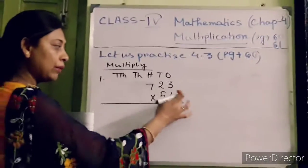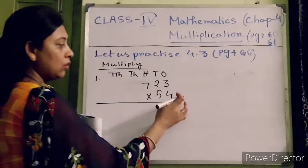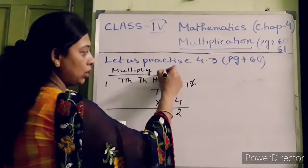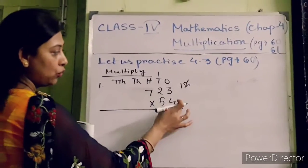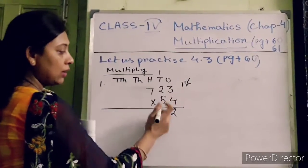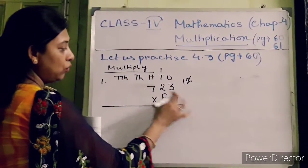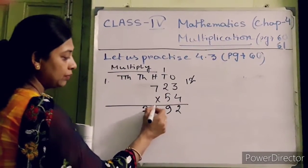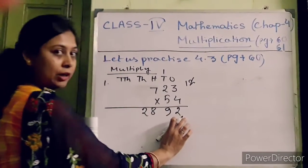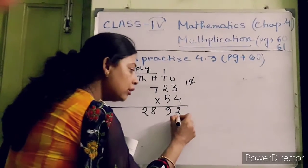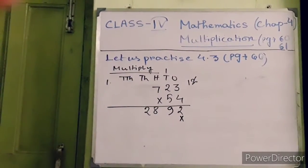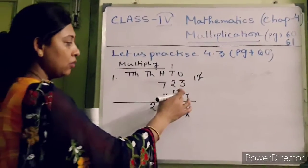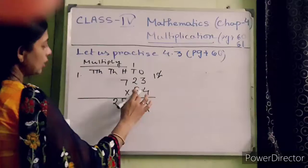You have to use the table of four. Four into three is twelve — cut two and write two here, carry one on the tens place. Four into two is eight, plus one is nine. Four into seven is twenty-eight. After getting the number, put a cross on the ones place. Now next you have to multiply with five.